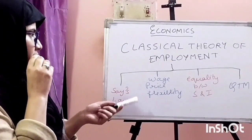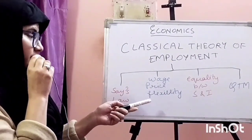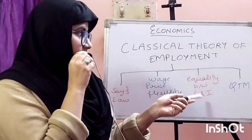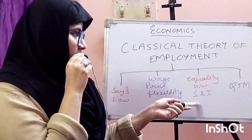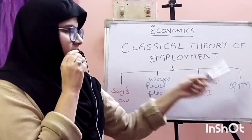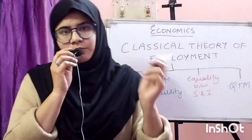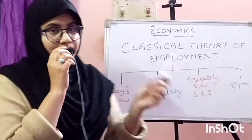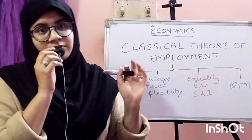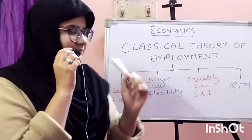The first one is Sales Law. The second one is Wage-Price Flexibility. The third one is Equality between Saving and Investment, and the last one is Quantity Theory of Money, or QTM. So let's do these one by one.